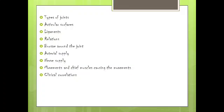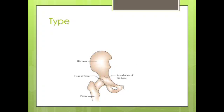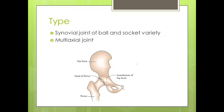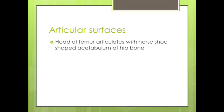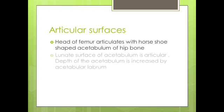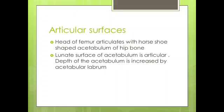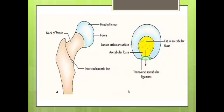First, type of joint. Hip joint is a synovial joint of ball and socket variety. It is a multi-axial joint. Now articular surfaces — the head of femur articulates with the horseshoe-shaped acetabulum of hip bone. The lunate surface of acetabulum and its depth is increased by the acetabulum. In this picture we can see the head of the femur and the lunate surface of acetabulum covered with articular cartilage.